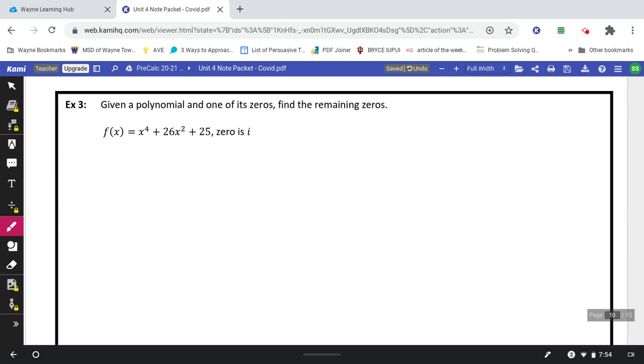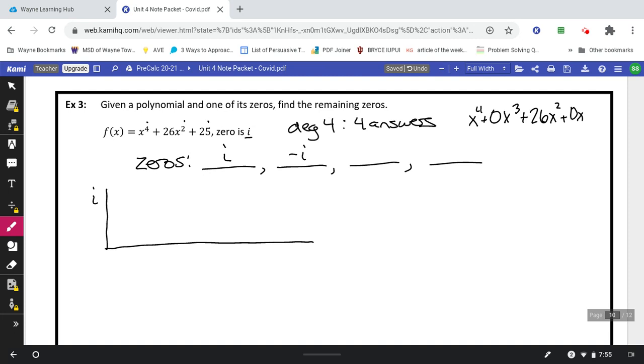Alright. Example number 3. We've got an x to the 4th. So degree 4 means there's going to be 4 answers. So my zeros: 1, 2, 3, and 4. They give me one of them as i. So I'll write that in. I know the other one automatically is negative i. So I'll write that in as well. Alright. I'll put an i on the outside. And notice here how the 4 jumps from a 4 to a 2 and then to x to the 0. So we want to think about this problem as x to the 4th plus 0x to the 3rd plus 26x squared plus 0x plus 25. That's really the problem that we're working on. So we'll put a 1, a 0, a 26, a 0, and a 25.